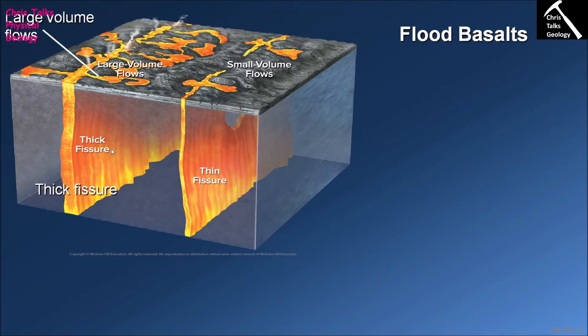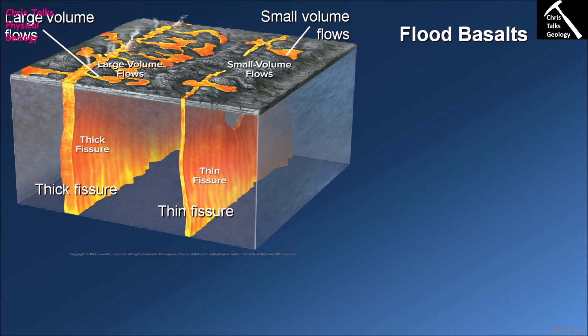Obviously the thicker the fissure, the larger the volume of lava you can pass through it and therefore extrude onto the surface of the earth. You can get more lava out of a larger fissure than a smaller one. Flood basalts are often associated with quite thick fissures, and that allows large volumes of lava to make it to the surface very, very rapidly.